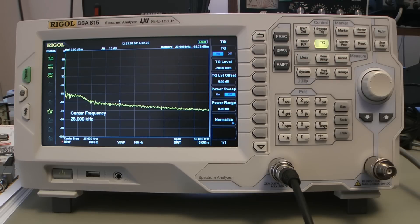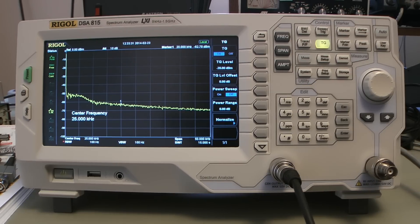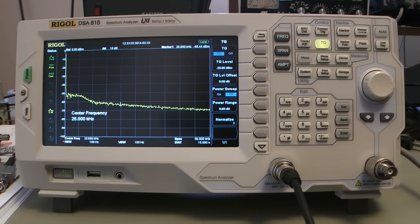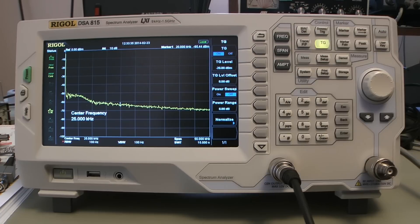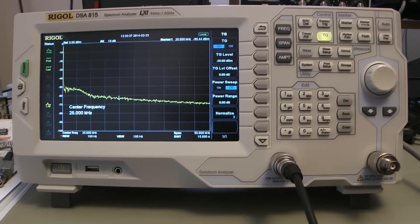Looking at the output of the tracking generator on my old Tektronix 2213 analog scope, you'll see I'm sweeping a 0 to 50 kHz signal.